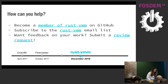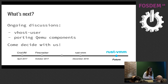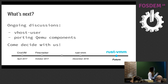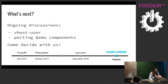Now, there are two reasons the talk isn't over — one is I just added the slides two days ago, and the other is we're going to talk about what's next. There are ongoing discussions about adding vhost user, a user-space implementation for vhost, in rust-vmm. There are also discussions around porting QEMU components, which is very interesting. The feature set is not set in stone, and it's an ideal time for you to come and help decide.